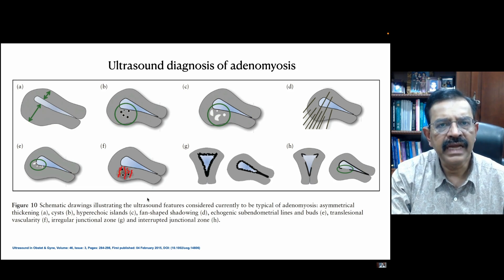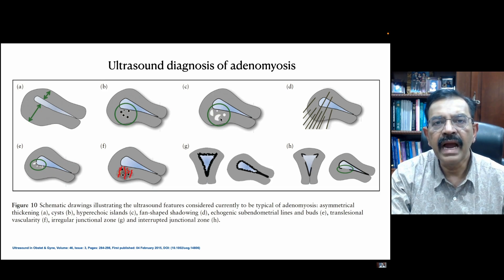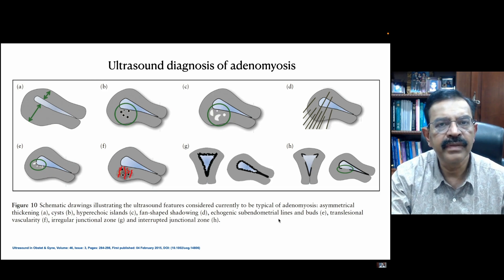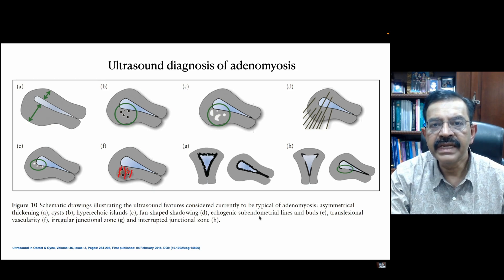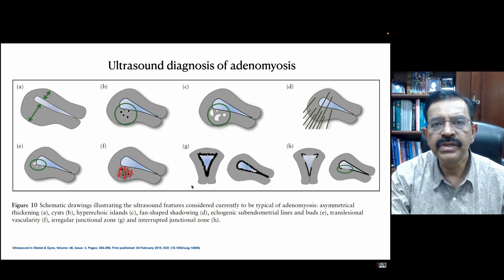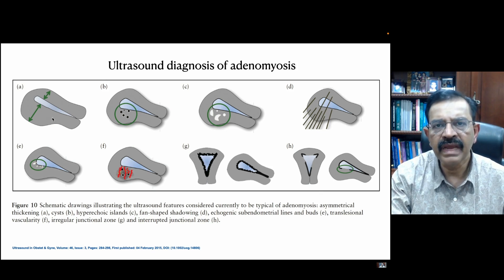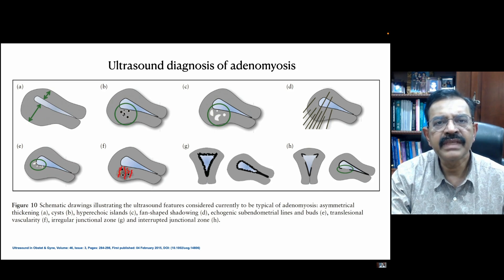However, there are other types. For example: cysts in the myometrium, echoic islands in the myometrium, fan-shaped lesions in the myometrium, echogenic subendometrial lines, translational vascularity, irregular junctional zones, and interrupted junctional zones. These are not very easily seen by ultrasound. Most of the time, we are only familiar with the three types — asymmetrical thickening, cysts, and lakes in the adenomyosis.